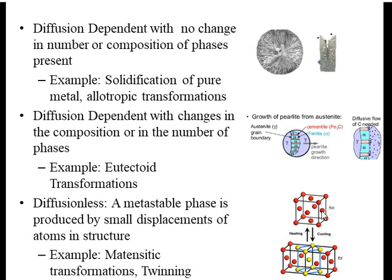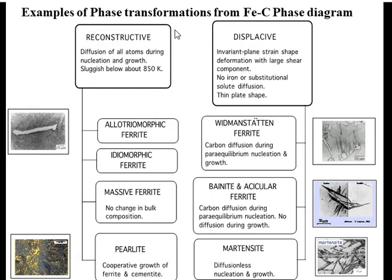In martensite, gamma austenite — which is FCC — changes to a BCT structure, instead of the BCC structure it would otherwise become. For reconstructive transformations assisted by diffusion, versus displacive transformations with an invariant plane strain shape deformation and large shear components: bainite involves carbon diffusion during para-equilibrium nucleation but no diffusion during growth, while martensite is diffusionless for both nucleation and growth.